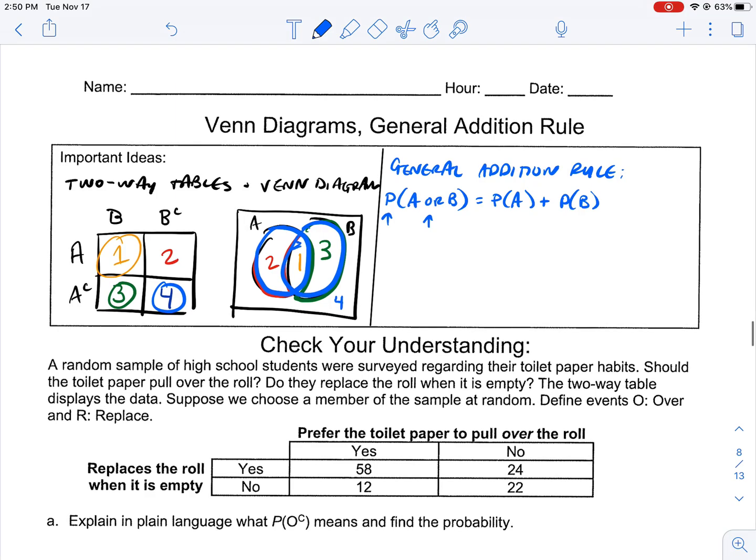But when we consider the general addition rule, what we have to consider is there's a space here that's counted twice. In our general addition rule, we have to subtract the probability of A intersect B, that middle portion.